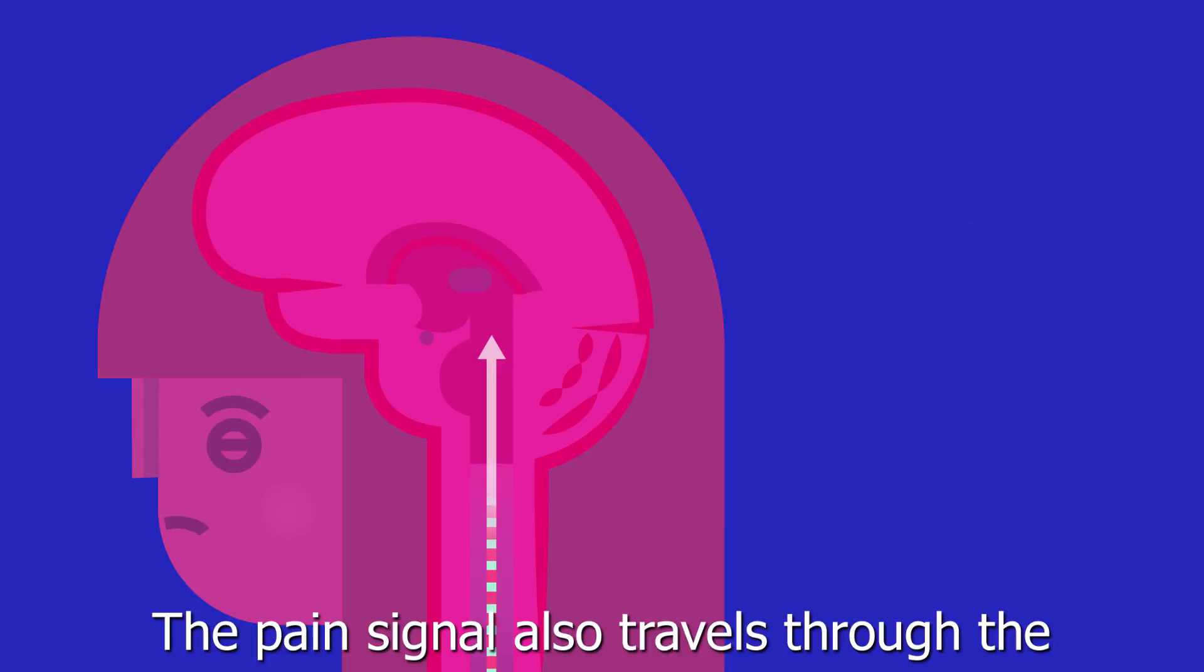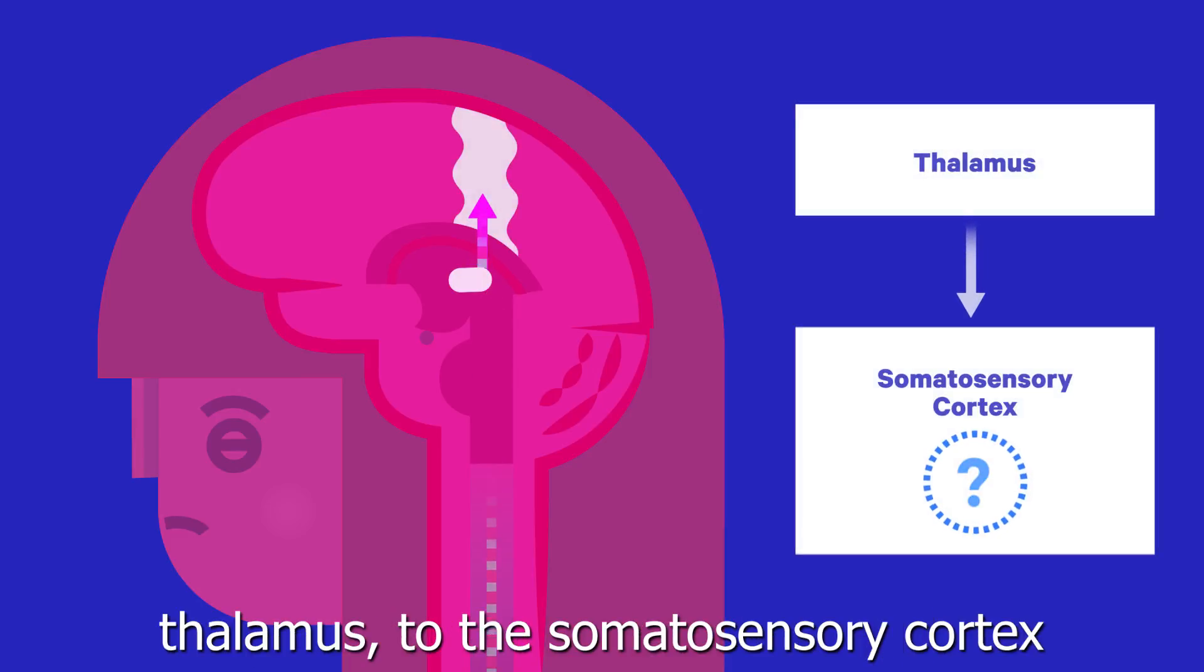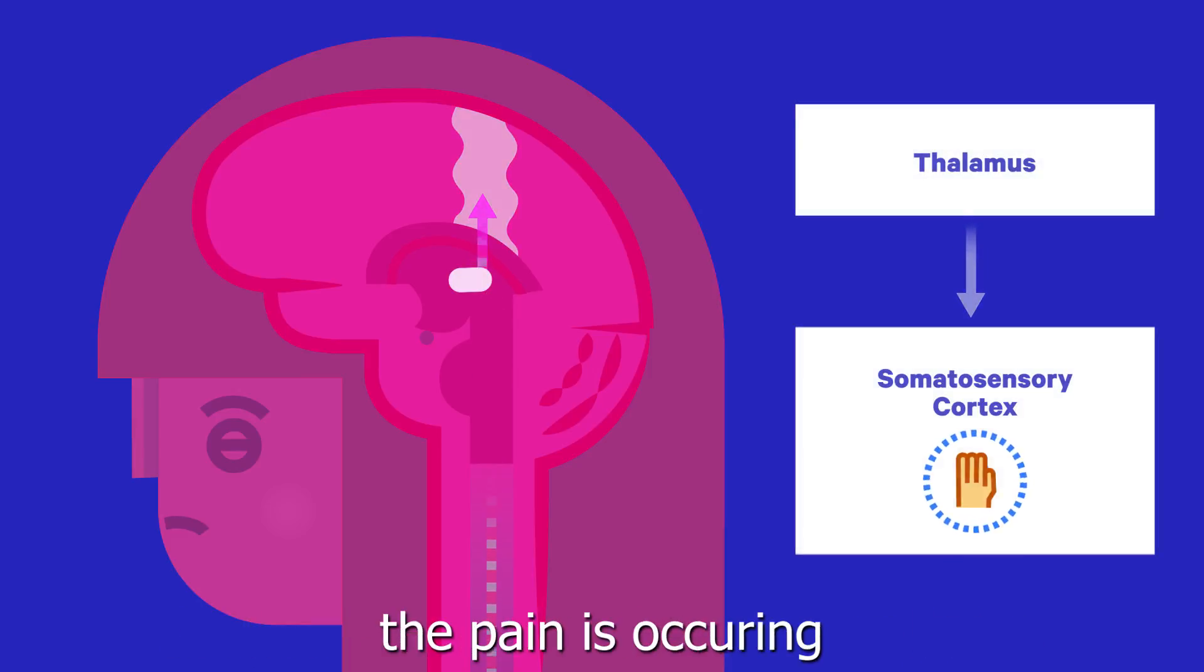The pain signal also travels through the thalamus to the somatosensory cortex, which determines where on the body the pain is occurring.